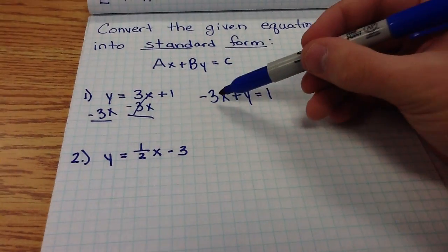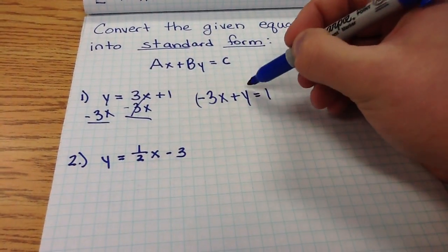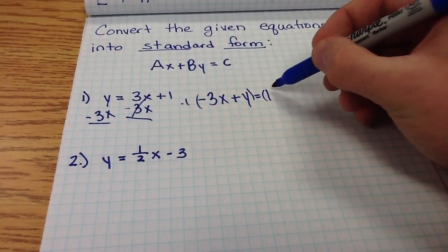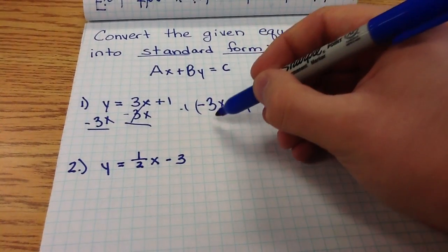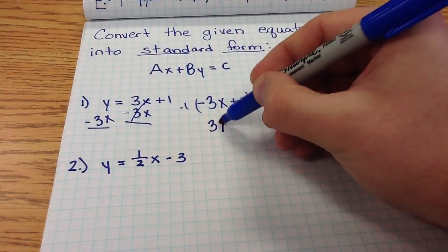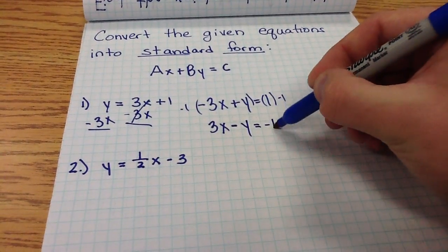It's a good habit to have that A value be positive. So what I can simply do is multiply both sides of the equation by negative 1. Negative 1 times negative 3 gives me a positive 3x. Negative 1, so that's minus y, equals negative 1.